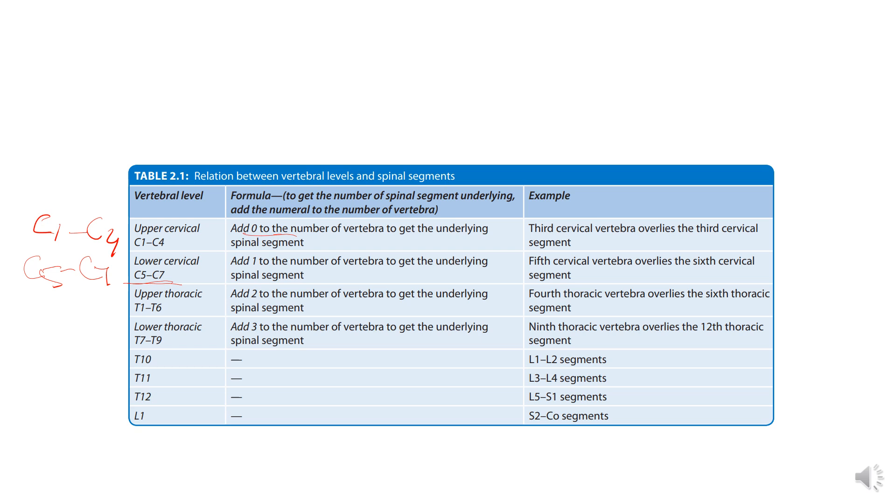So in upper thoracic region, T1 to T6, add 2. So at the level of fourth thoracic vertebrae lies the sixth thoracic segment. Lower thoracic region, that is T7 to T9, add 3. Ninth thoracic vertebrae overlies the 12th thoracic segment.